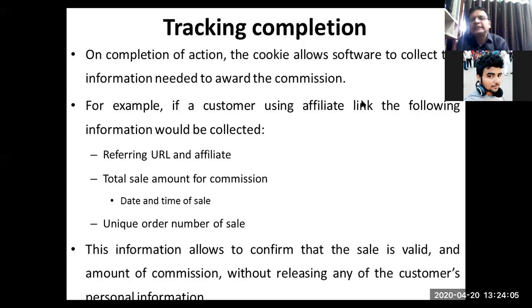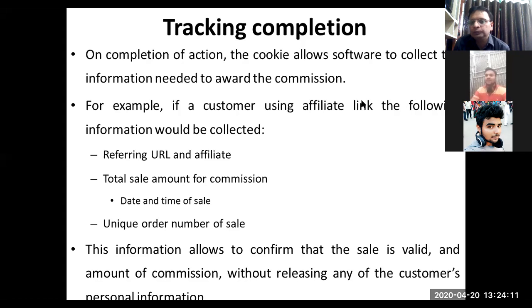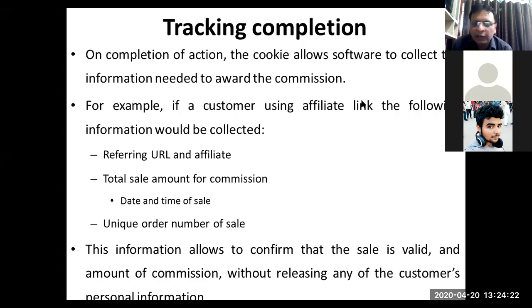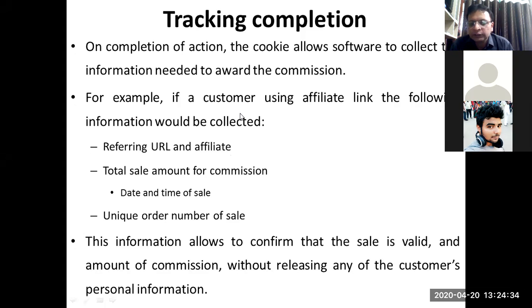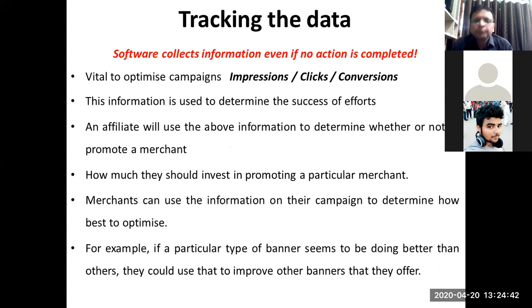Tracking completion: once the transaction has happened and the action is complete, the cookie helps the software collect information. It checks whether this person is the same person who made the transaction, identifies the referring URL and affiliate, calculates the total sales amount and commission, records the date and time of sale, and raises a unique order number. If the transaction is valid, it is calculated for revenue.